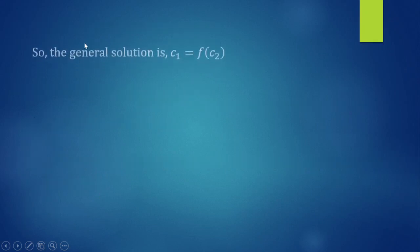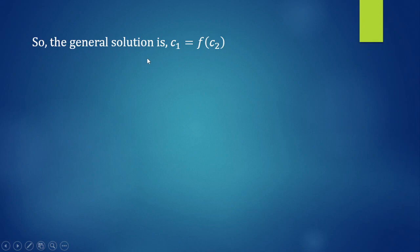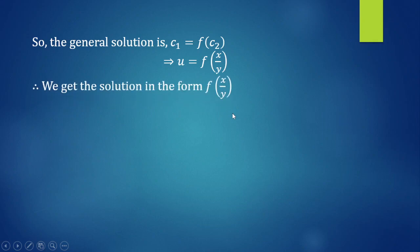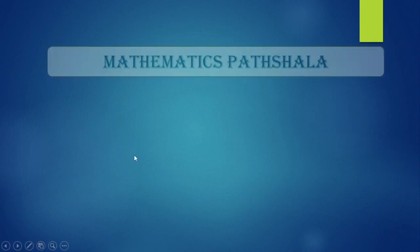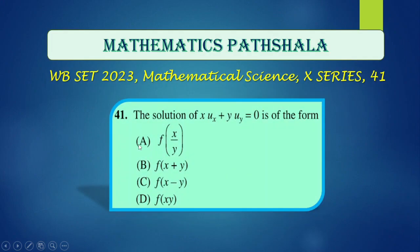We can write the general solution of this Lagrange's equation as C1 equals F(C2), which gives us U equals F(X/Y). So the solution is in the form F(X/Y). Looking at the options, option A gives F(X/Y), which matches our solution, so option A is the correct answer.